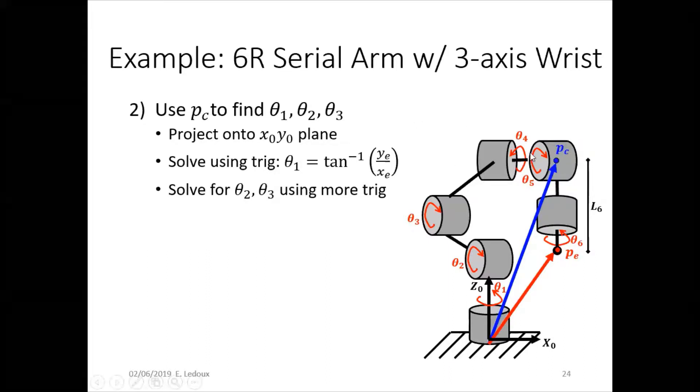Then use PC to find theta 1, theta 2, and theta 3. So you can project it onto the xy plane since theta 1 rotates around the vertical axis. And then it's pretty easy to get theta 1. It's just the inverse tangent of x and y. But then for theta 2 and theta 3, you'll have to use some trig since those joints both point in the same direction.